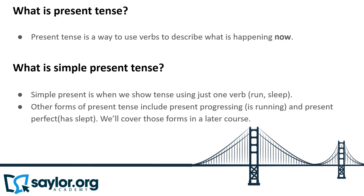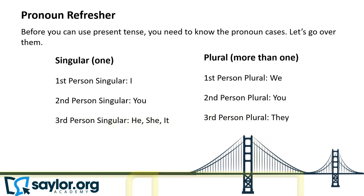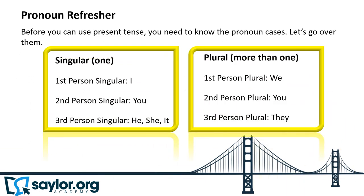Pronoun refresher. Before you can use present tense, you need to know the pronoun cases. Let's go over them. Singular — one person. First person singular: I.